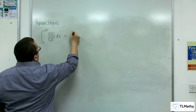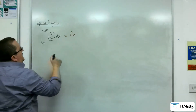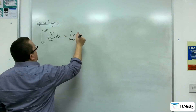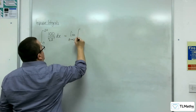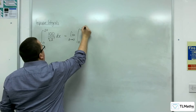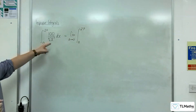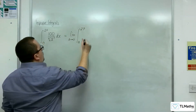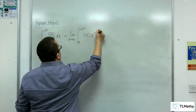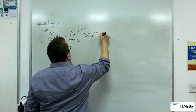So we're going to write it down as the limit as a tends to 0 of the integral between a and 27. And we're going to write this as 100x to the minus one third dx.